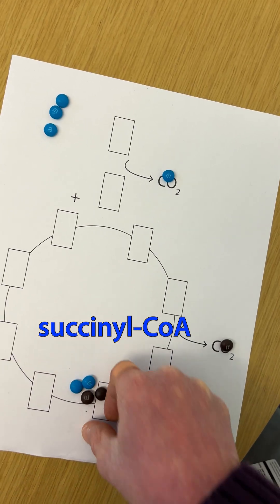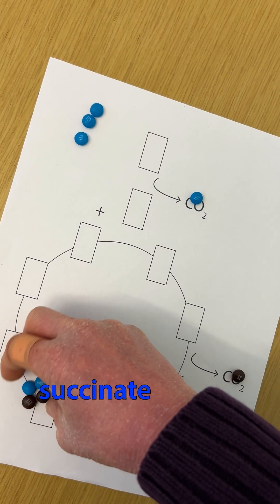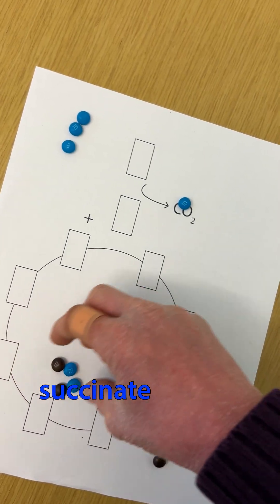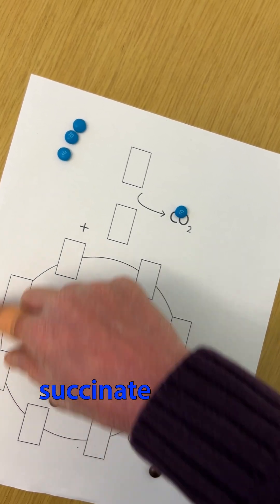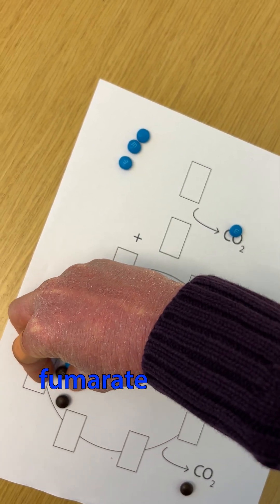Actually, when you get to succinate, you end up with a symmetrical molecule and you can't tell top from bottom. What can happen is that you have a 50-50 chance of the next turn around the cycle doing one or the other.